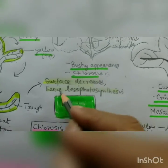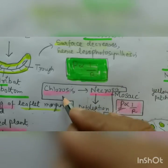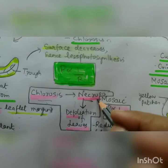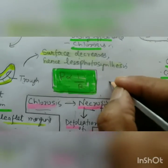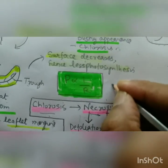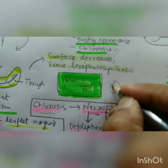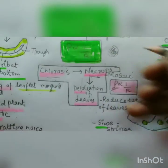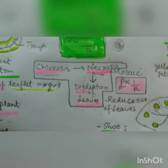First the spots come, then chlorosis, then we have necrosis — then reduced size of leaves, ultimately defoliation of leaves and death of the plant.